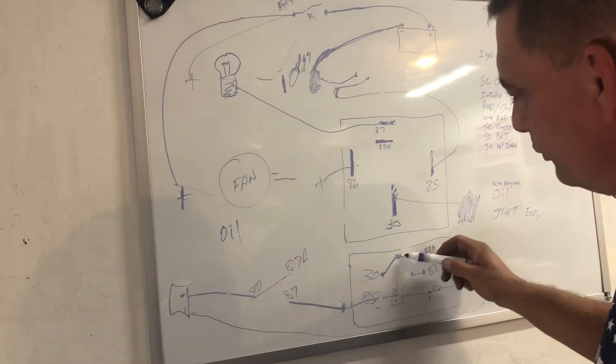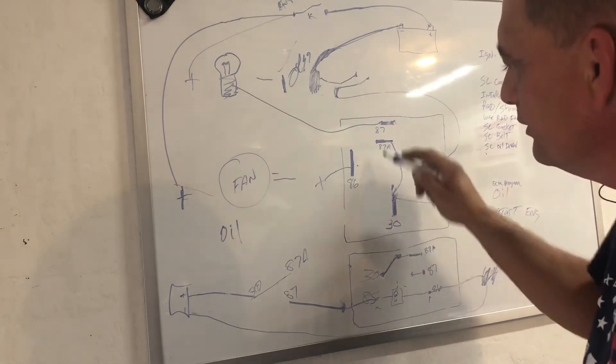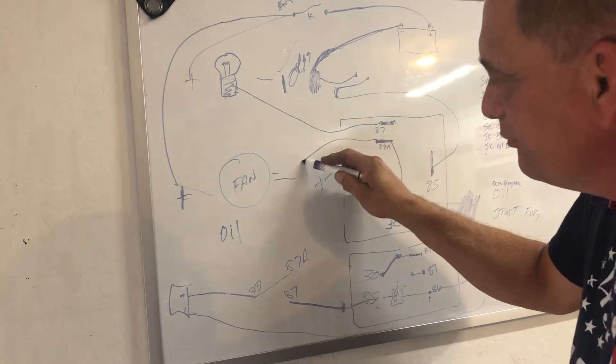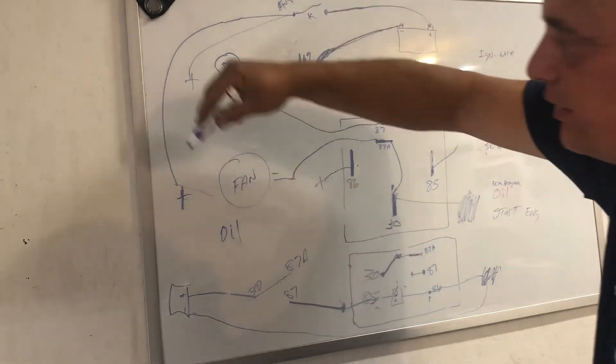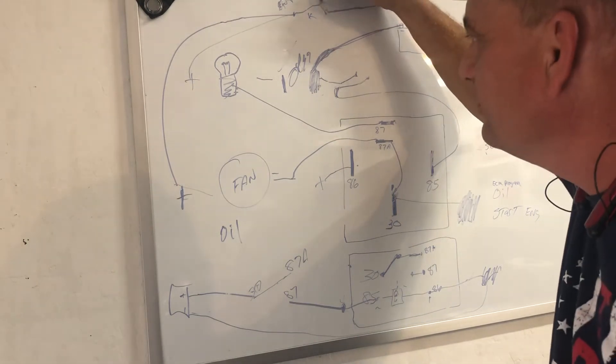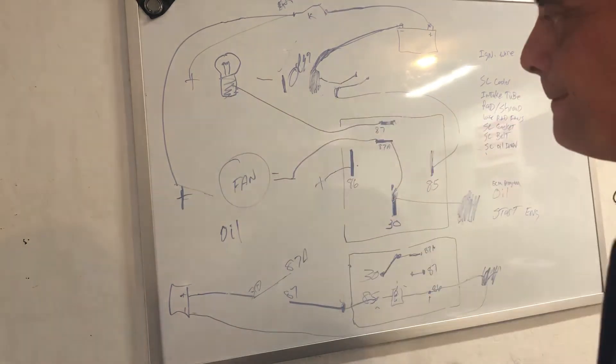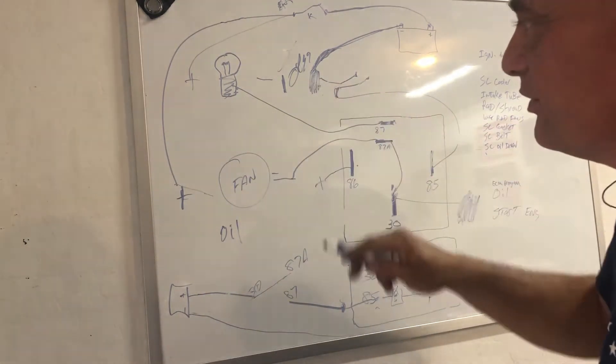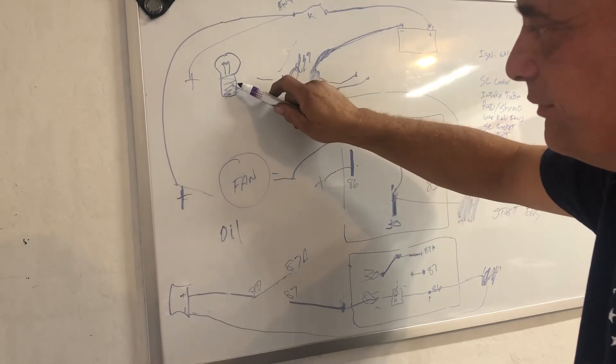The gate swings to 87A, which your power now goes to 87A, and you now get a negative power to your negative side of the fan. And the positive side of the fan is connected to, again, your switch at your key. So when your switch is on, the fan's got positive, the engine gets oil pressure, it turns off the light and turns on the fan.